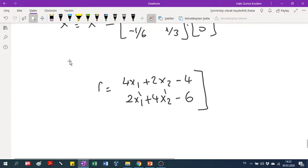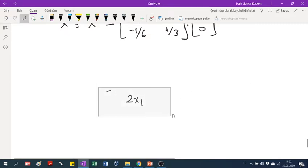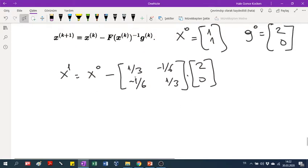So I write the formula. I write the formula. I delete all of them. Then of course, you need to substitute x0 also. x0 is (1,1) minus.